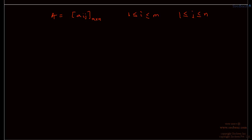Now let us learn some of the most common and different types of matrices. First of all, what is an equal matrix? Two matrices are said to be equal when each and every corresponding element is the same.